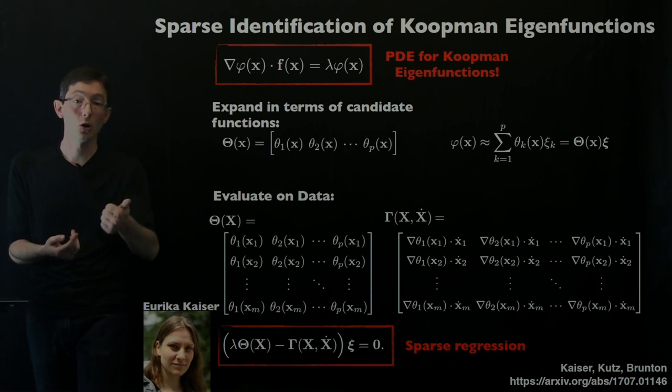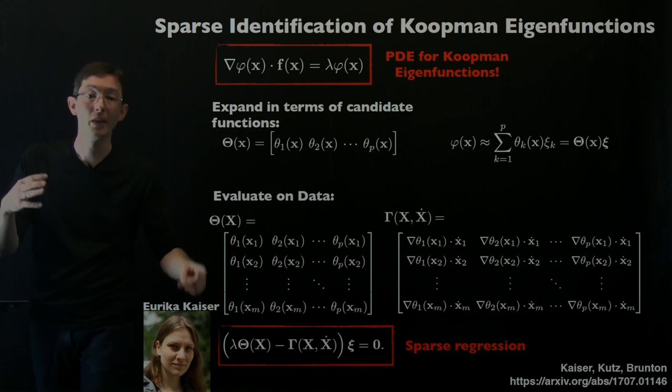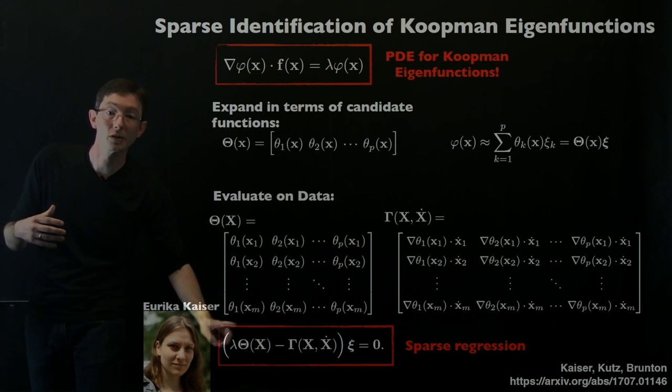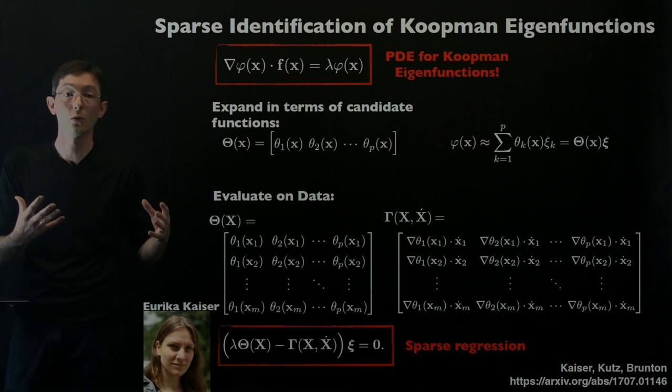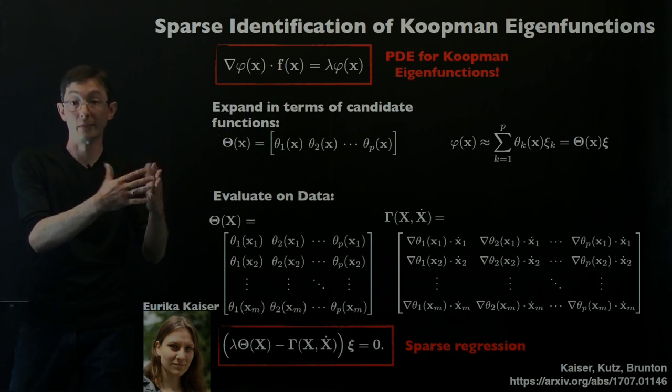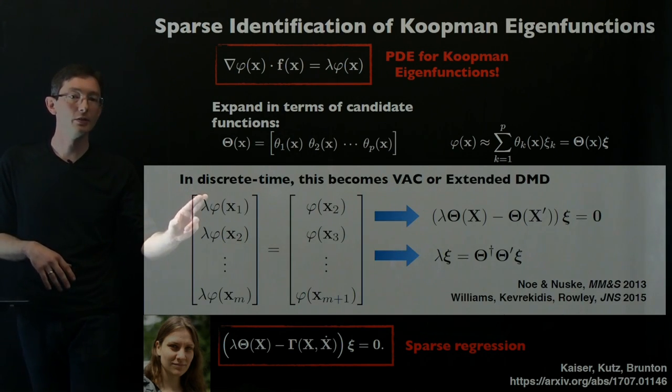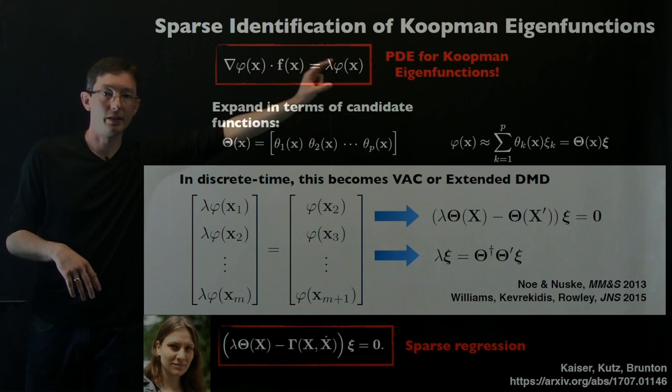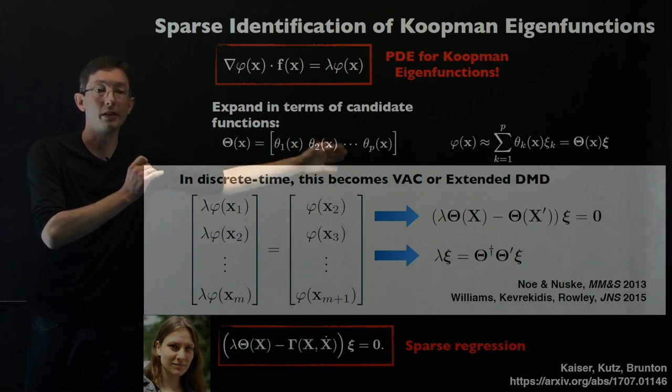For example, total energy, like a conserved quantity like energy or angular momentum, is going to be one of these Koopman eigenfunctions with lambda zero. Eureka has been able to find lots of those conserved quantities from data using this sparse framework, and then you develop control laws for that. This is related to in discrete time, if you write this in the discrete time formalism, you essentially recover the VAC or the extended DMD.